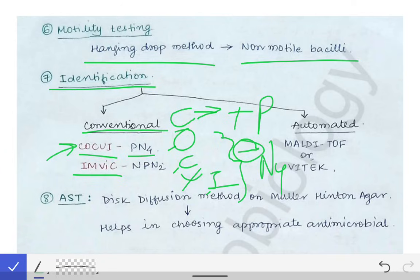The IMVIC test result for Shigella is NPN2: indole is negative, methyl red is positive, VP test is negative, and citrate is negative. So only methyl red is positive while the remaining three are negative.